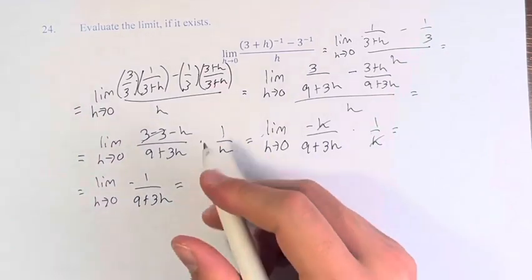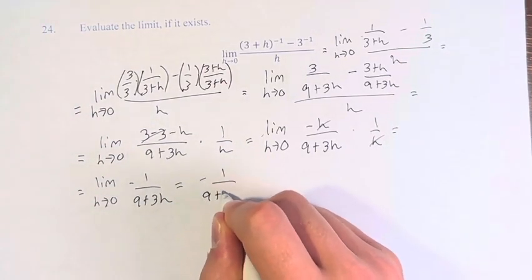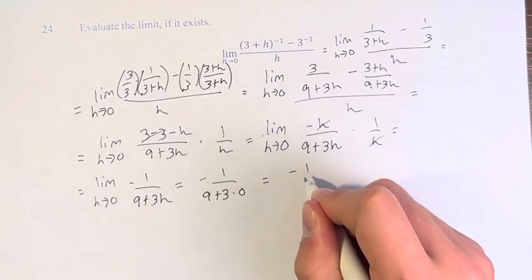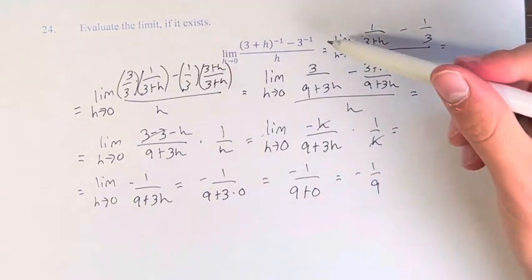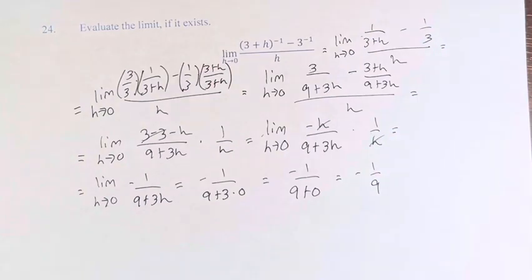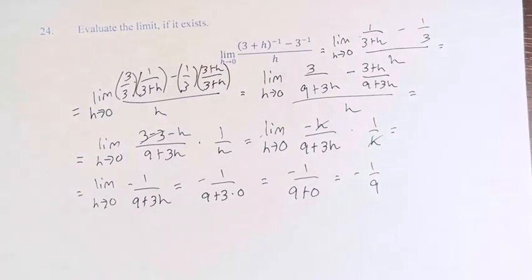Now we can plug in 0 to get negative 1 over 9 plus 3 times 0, negative 1 over 9 plus 0 is negative 1 over 9. So therefore the value of this limit is negative 1 over 9. Thank you.